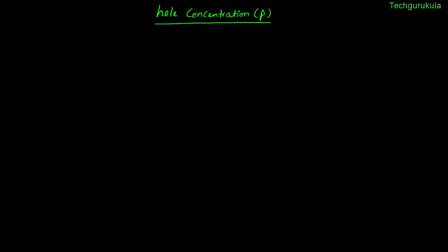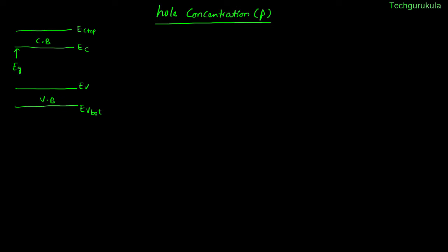In this video, we are going to derive and find the expression for hole concentration in valence band for a semiconductor. Let me take a semiconductor represented by an energy band diagram where we have a conduction band and a valence band, where the top edge of the valence band is EV and the bottom edge of the conduction band is EC. The top edge of the conduction band is EC_top and the bottom edge of the valence band is EV_bottom. The difference between EC and EV is the energy band gap, also called the forbidden energy gap. Our intention in this video is to find the concentration of holes in the valence band, because holes in the valence band contribute to the conduction of electric current.